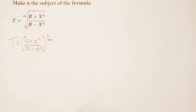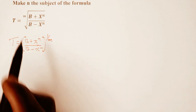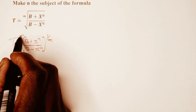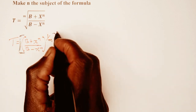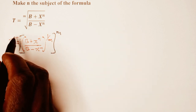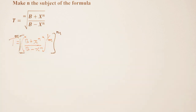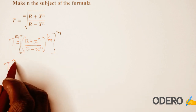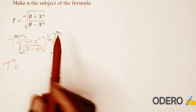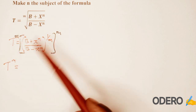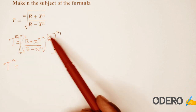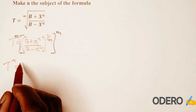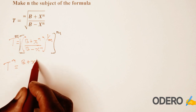When it is written this way, you can multiply both sides by power m. So you multiply both sides by power m, and you are going to end up with t raised to m is equal to — then according to laws of indices, when you multiply the exponent 1 over m by m it becomes 1, so it disappears. This side you remain with b plus x raised to n over b minus x raised to n.